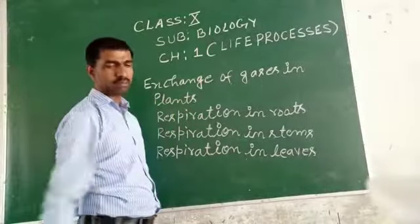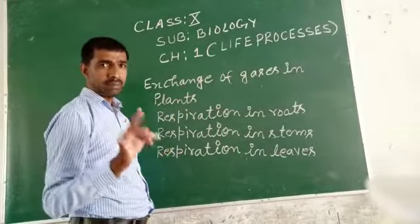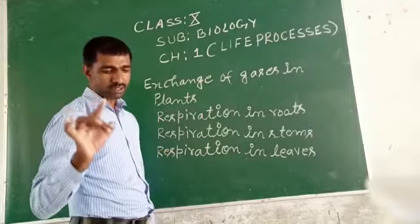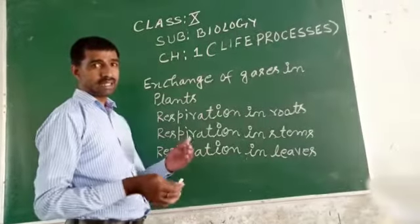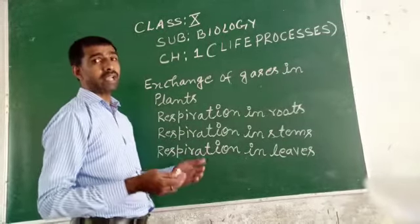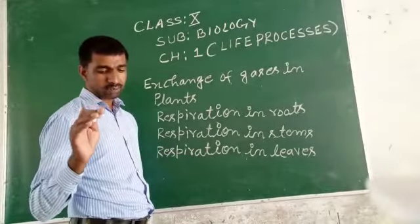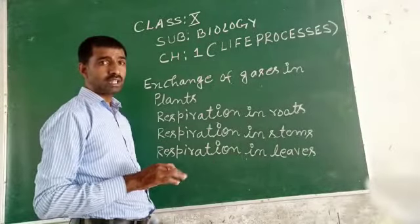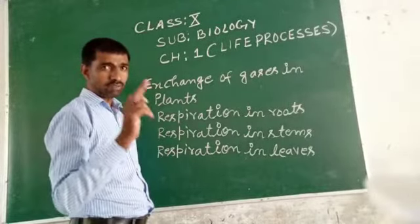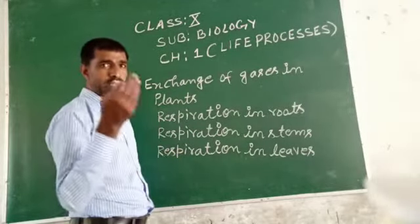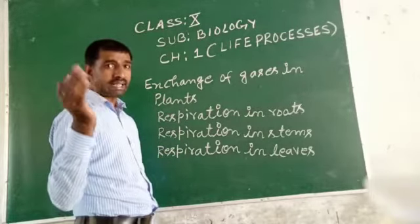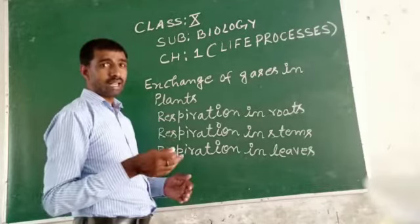So, exchange of gases in plants — that means every part of a plant, such as leaves and stem, respires. Plants respire with the help of leaves and with the help of the stem also. Oxygen is obtained from the atmosphere through stomata present in the leaves.